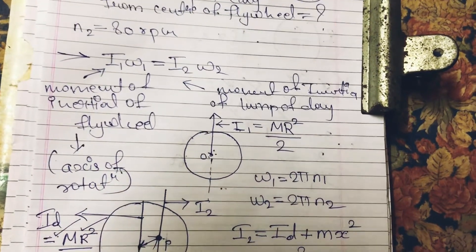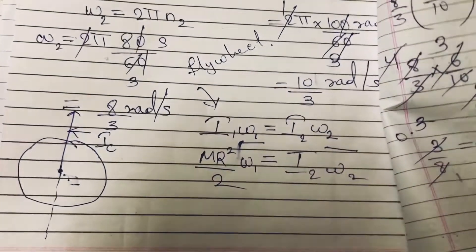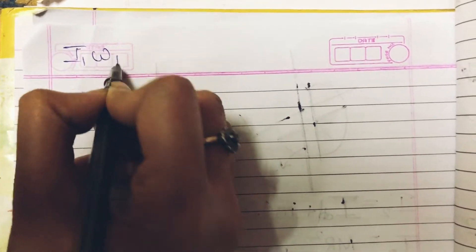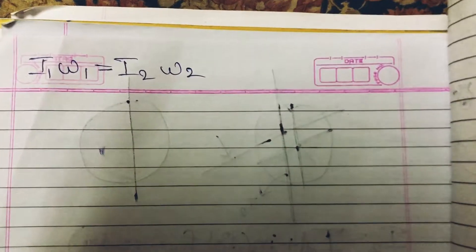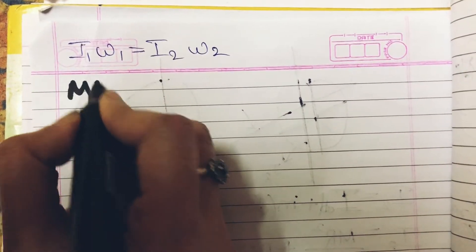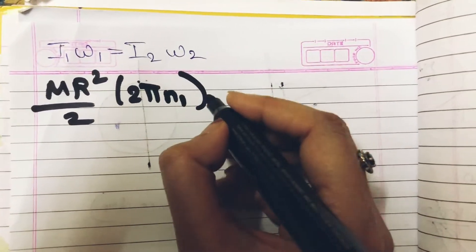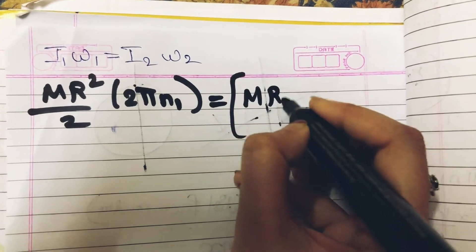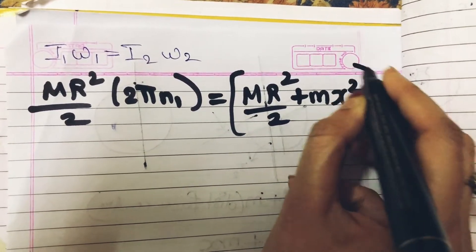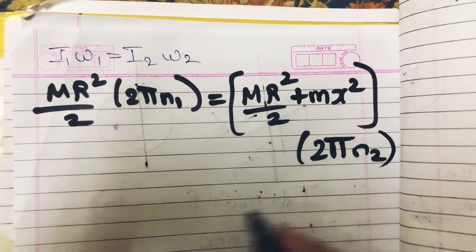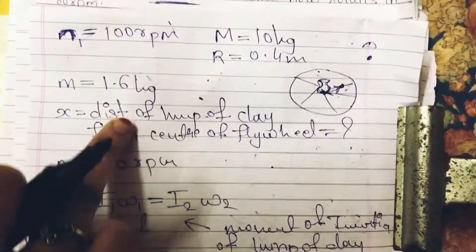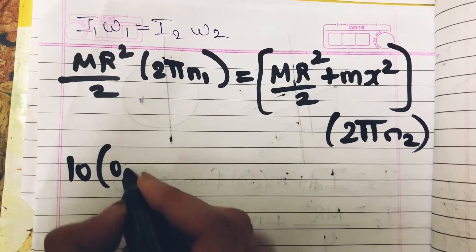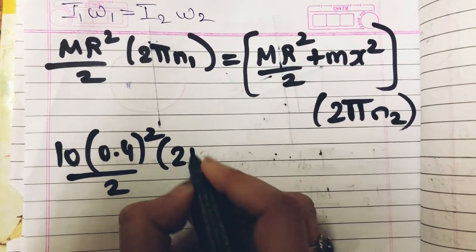We have all the formulas; we will just do the substitution and find out the answer. I₁ω₁ = I₂ω₂. I₁ is MR²/2, ω₁ is 2πn₁, I₂ is MR²/4 + mx², and ω₂ is 2πn₂. Mass is 10 kg, radius is 0.4 m, so substituting: 10 × (0.4)² / 2 × 2π × n₁.